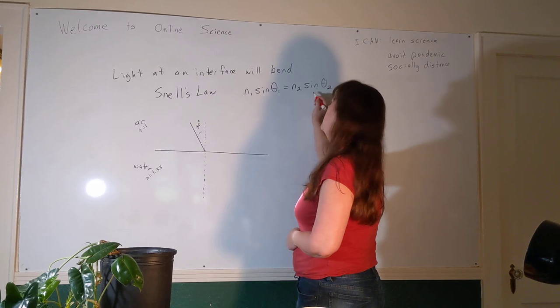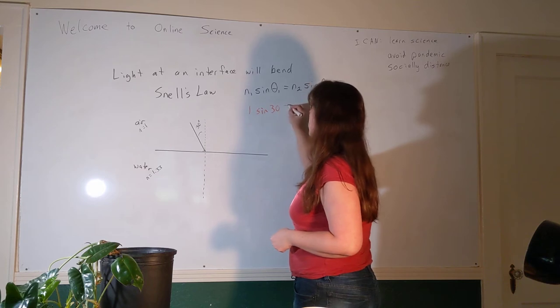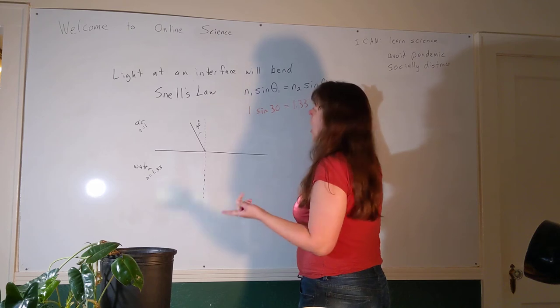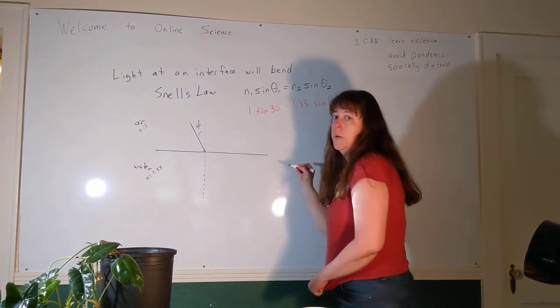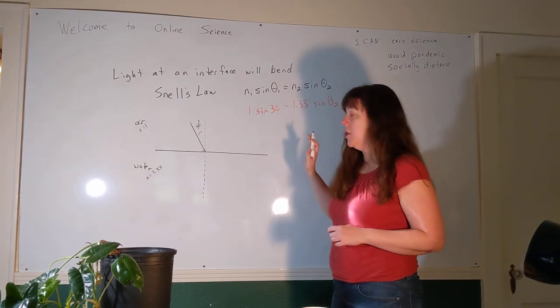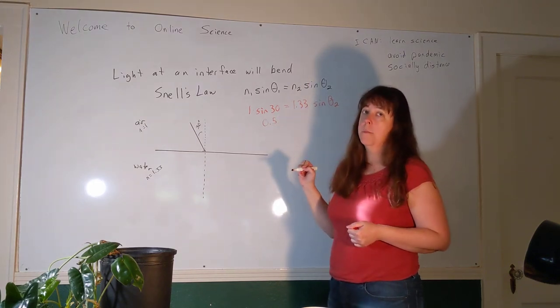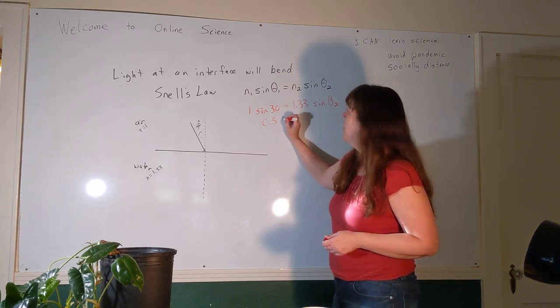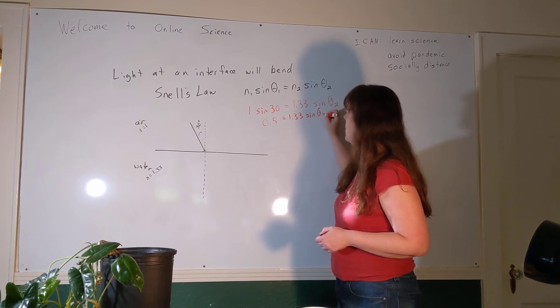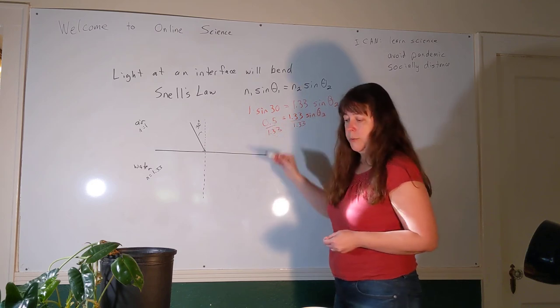To figure that out, we use Snell's law: n1 sine theta 1 equals n2 sine theta 2. n1 is 1 times the sine of 30, which is equal to n2, which is 1.33, times the sine of—that's what we're looking for—theta 2. Alright, so 1 times the sine of 30 is just the sine of 30. If you need to plug it into a calculator, do it, but you might just know that the sine of 30 is one half. So 0.5 is equal to 1.33 times the sine of theta 2. We're going to divide both sides by 1.33.